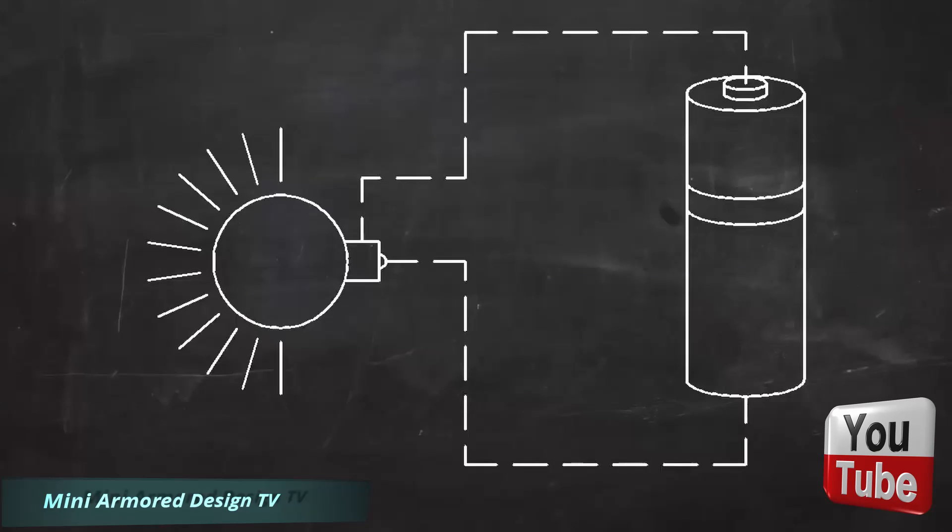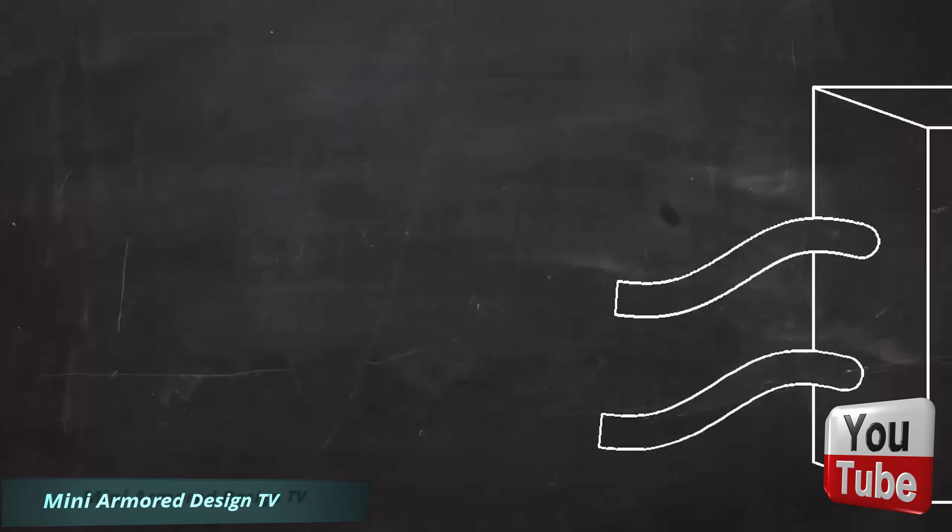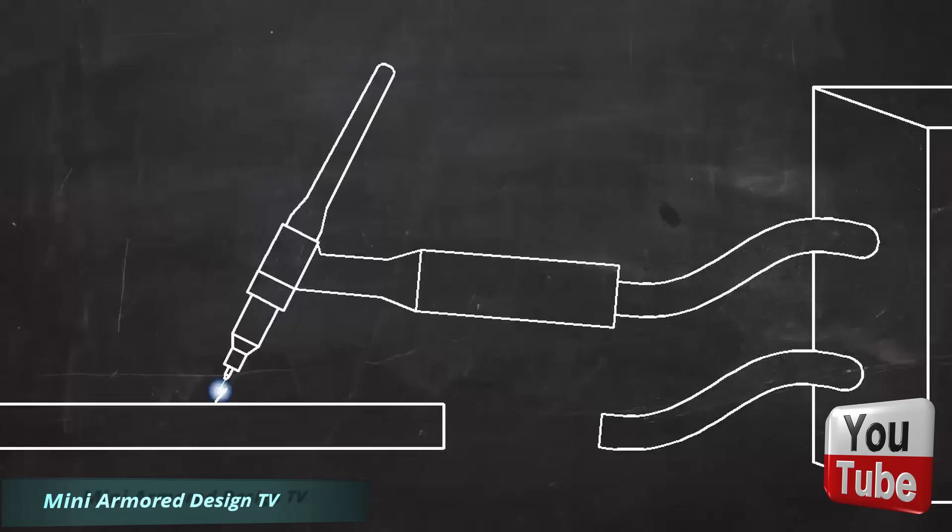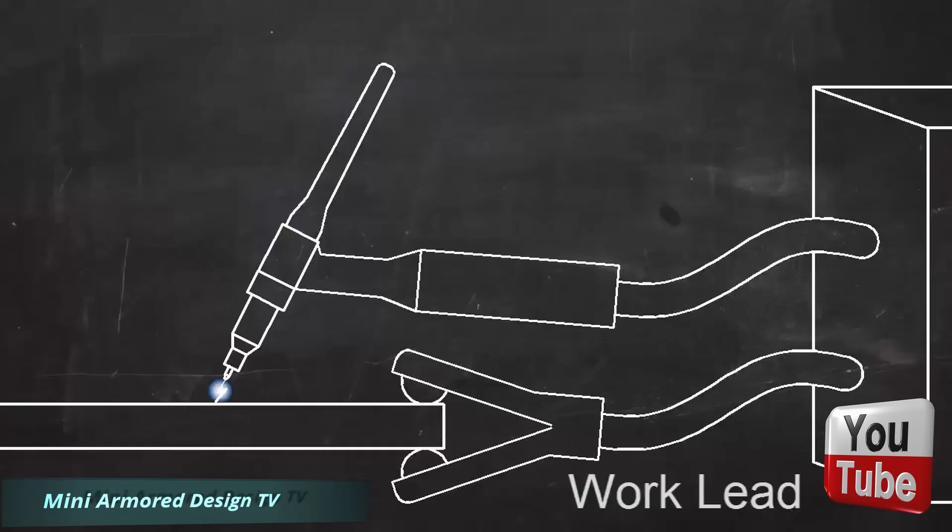In an electric circuit, the current flows in a loop. In TIG welding, the current has to flow in a complete circle from the machine, to the torch, into the work, and back to the machine. A work lead is clamped to the work to complete the circuit from the workpiece back to the machine.